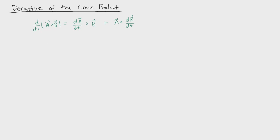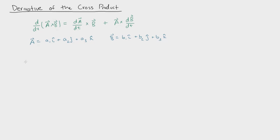The first thing we're going to do is define a and b. So a lives in three dimensions: a is simply a1 in the i direction plus a2 in the j direction plus a3 in the k direction. And b is defined in a very similar way. Since we're looking at the cross product between a and b, we're going to compute the cross product first and then take the derivative of what we get. So we find the cross product of a and b as the 3 by 3 determinant.